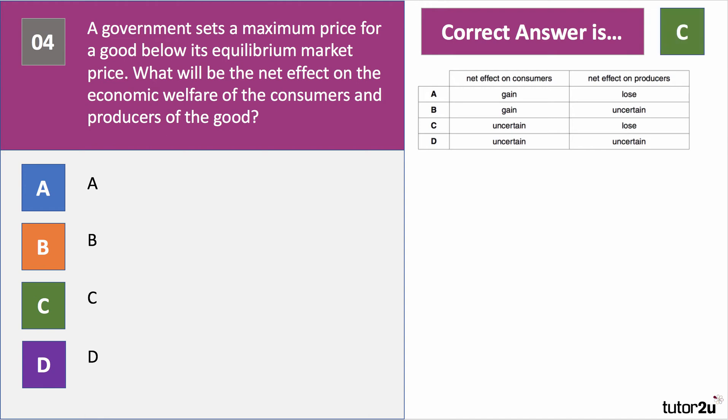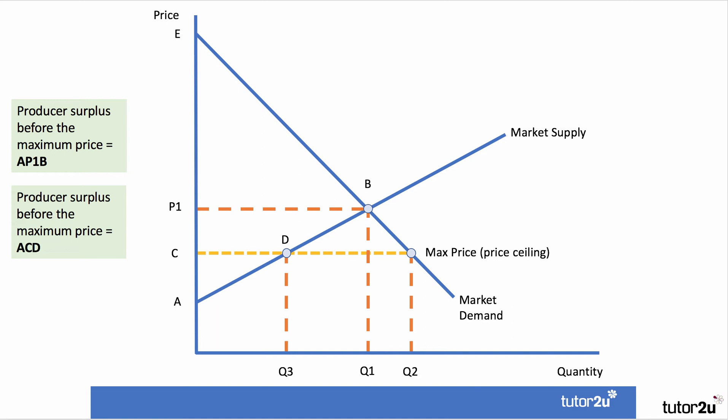The answer is C. The net effect on consumer welfare is actually uncertain, but we can be pretty sure that the net effect on producers is not good news. Consider a maximum price in the housing market — the free market price is P1, we introduce a maximum price ceiling of C. That means the producer is selling less now because they won't be willing to sell as much — quantity is restricted to Q3. Producer surplus before the maximum price was area A, P1, B; now they're getting price C, so it's area A, C, D. Producers are worse off.